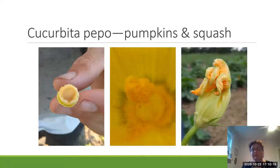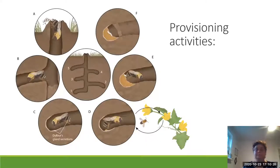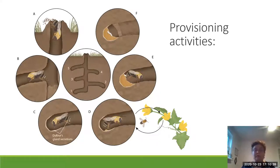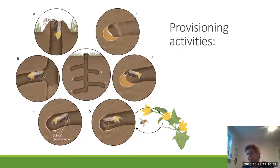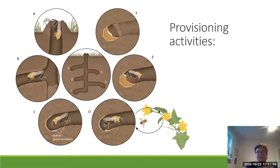In Ontario, the bees are entirely dependent upon cultivated Cucurbita to survive. The focus of my talk is the provisioning activities of female hoary squash bees on Cucurbita crops. To provide context, you have to understand the whole cycle of nesting: the bee builds a vertical tunnel and lateral tunnels, and the lateral tunnels have nest cells on them. The nest cells have to get prepared and waterproofed, and then she can start foraging and bringing pollen into those nest cells.